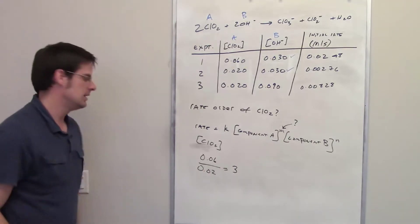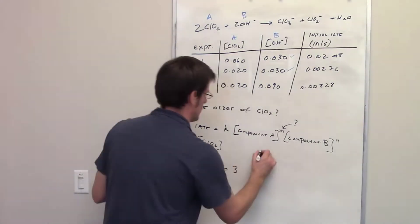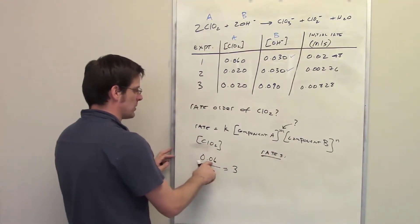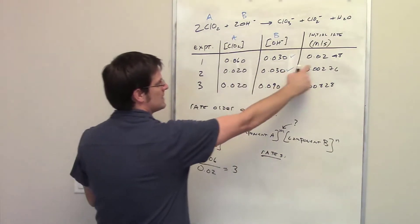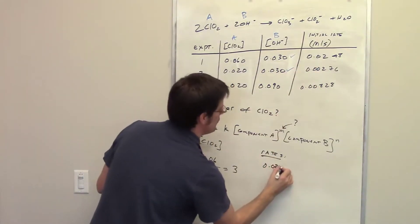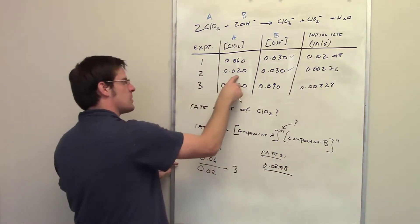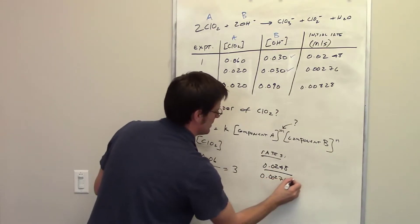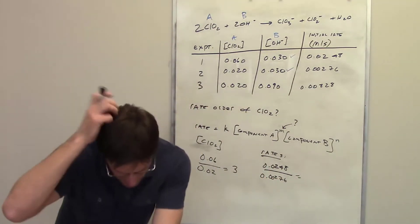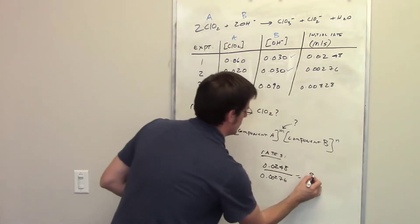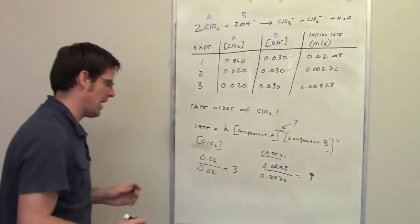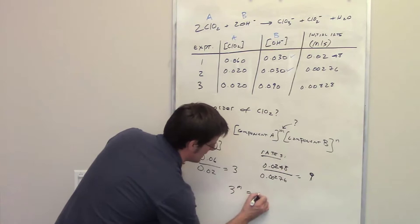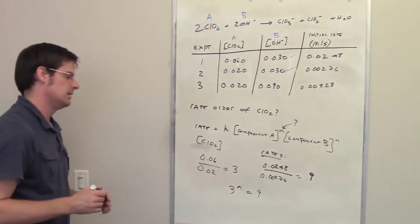How was the rate affected when I made that change? When the concentration was 0.06, the rate was 0.0248. When the concentration was changed to 0.02, the rate went to 0.00276. Dividing the big one by the small one, I end up getting 9. Now all I do is take 3 and raise it to the M and set that equal to 9 and solve for M.